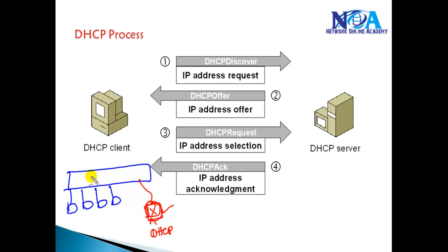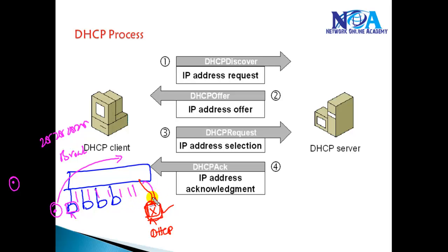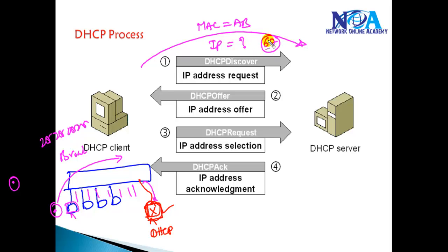When you power on a client with 'Obtain IP address automatically' selected, it means it's a DHCP client and it will send a broadcast request to 255.255.255.255. This broadcast goes to every device in the network, including the DHCP server. The broadcast message essentially says: 'Is there anyone who can assign me an IP address? My MAC address is so-and-so.' It's sent on port 67, which is the DHCP port. All other devices simply ignore it because they're not running DHCP.